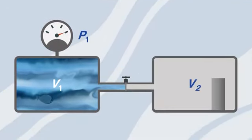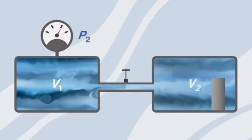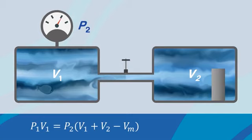Third, if we consider an actual case where we have a rock inside chamber 2, then Boyle's law becomes p1v1 equals p2 times v1 plus v2 minus vm.